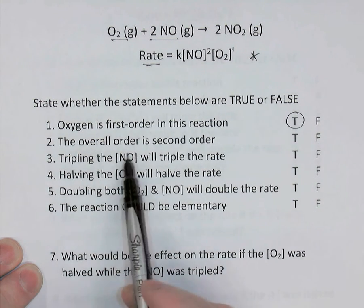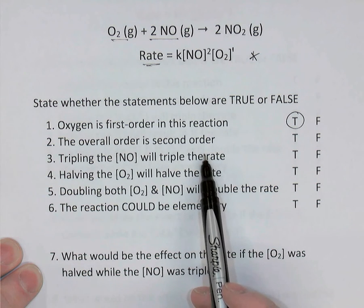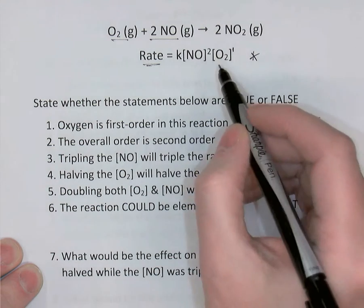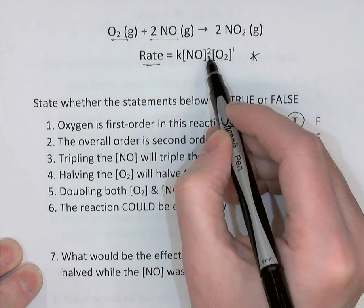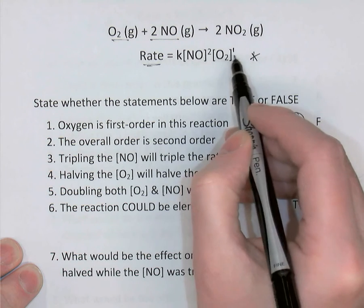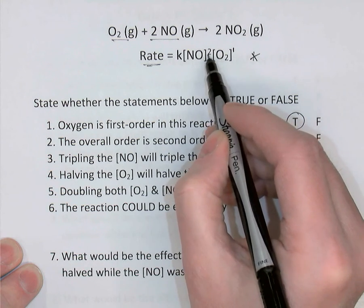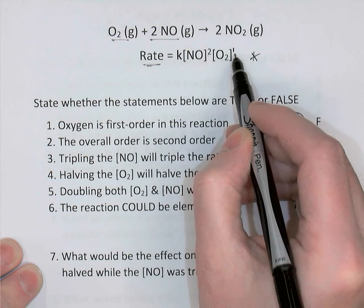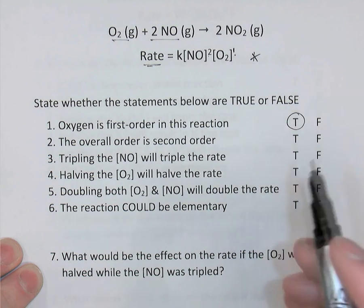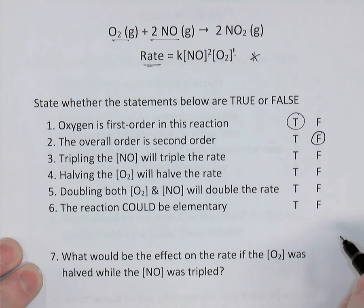The overall order is second order — is that true or false? To get the overall order, you look at the rate law exponents and add them up. In this case, 2 plus 1 — the overall order is actually third order, a 3. So this statement is false.